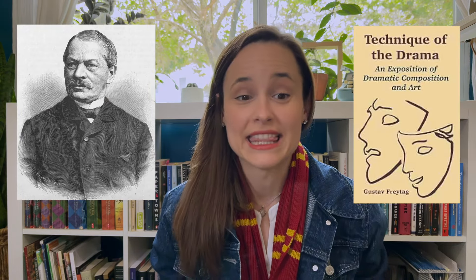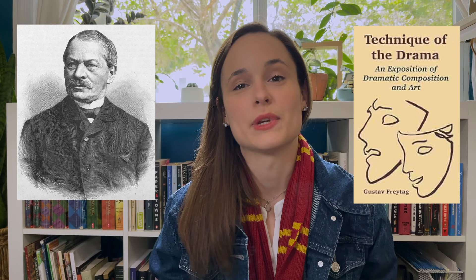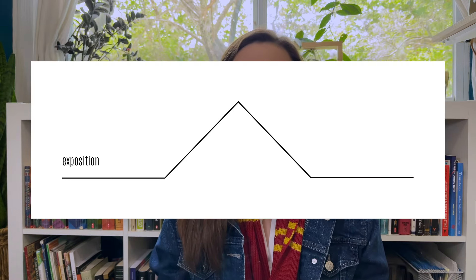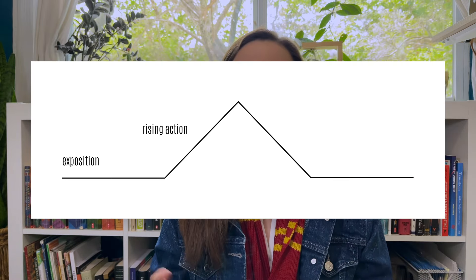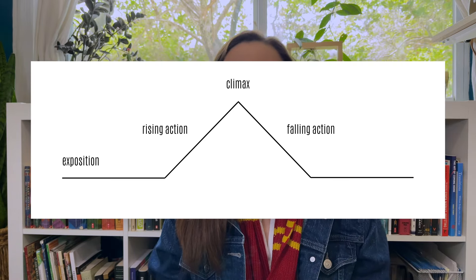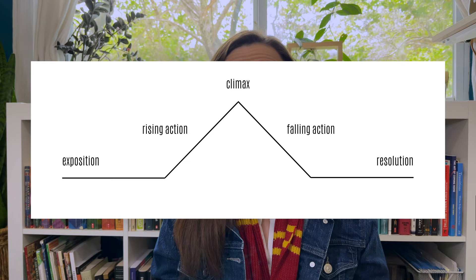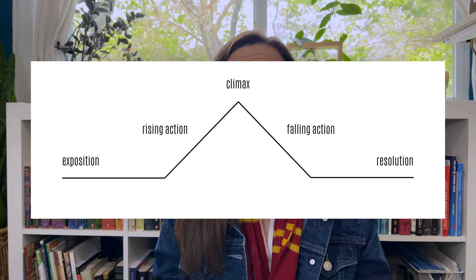The five acts were later formalized and written about by Gustav Freytag in his 1863 work, Freytag's Technique of the Drama. And this is where we get those familiar classic terms of exposition, rising action, climax, falling action, and resolution, which are what make up Freytag's pyramid.